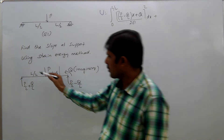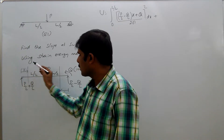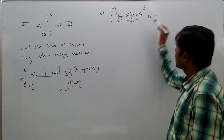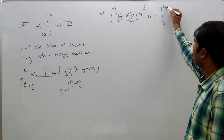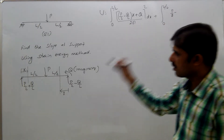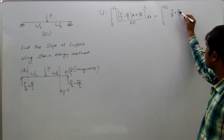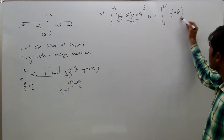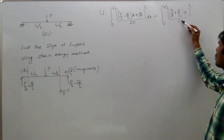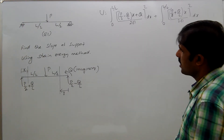Plus, for the left portion, taking x from the left to cover the left span of L/2, the bending moment is P/2 plus Q/L into x. That is M for the left portion. So M squared by 2EI dx is the strain energy for the left portion. This gives the total strain energy for the entire beam.